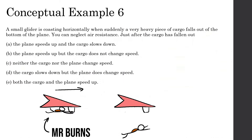Let's look at this conceptual question. A small glider is coasting horizontally when suddenly a very heavy piece of cargo falls out of the bottom of the plane. You can neglect air resistance just after the cargo has fallen out. Part A: the plane speeds up and the cargo slows down. B: the plane speeds up but the cargo does not change speed. C: neither the cargo nor the plane change speed. D: the cargo slows down but the plane does not change speed. E: both the cargo and the plane speed up.